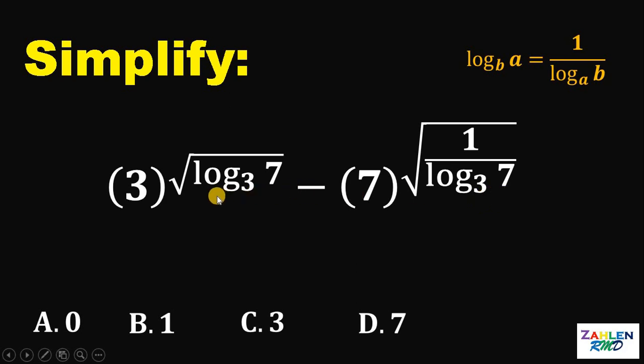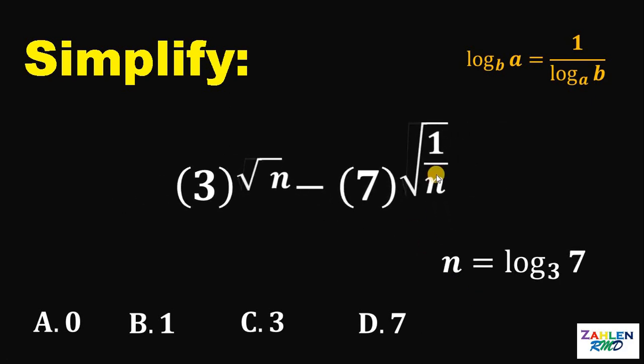Now, we have common term logarithm of 7 to the base of 3, so we can replace this with another variable. We call this as n. So, let n equals logarithm of 7 to the base of 3. Therefore, those expressions can be replaced with variable n. Thus, our expression becomes 3 raised to square root of n minus 7 raised to square root of 1 over n.